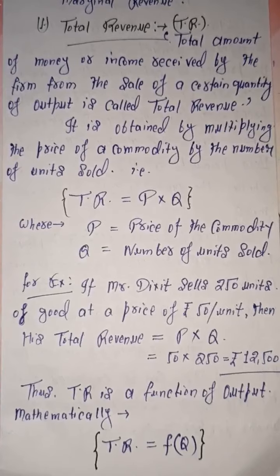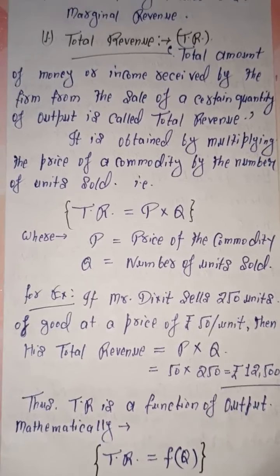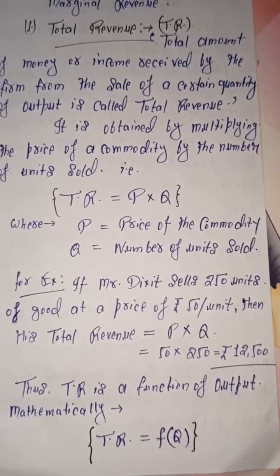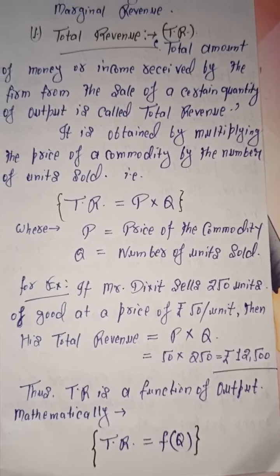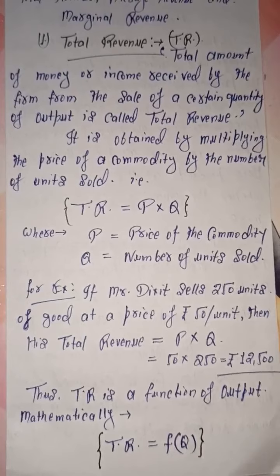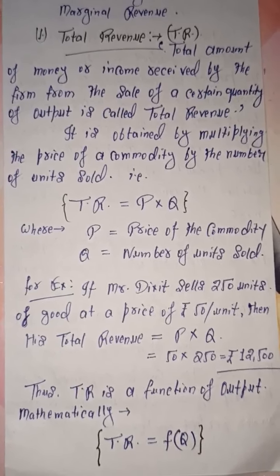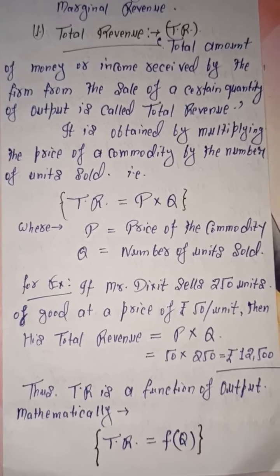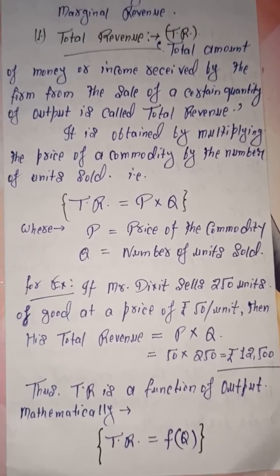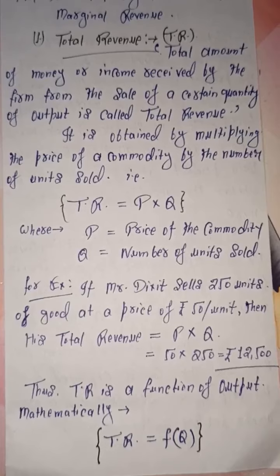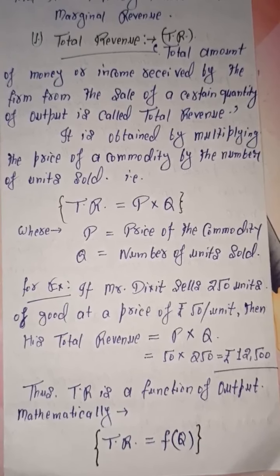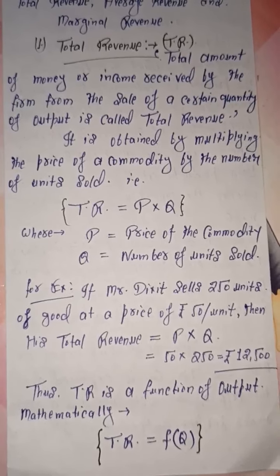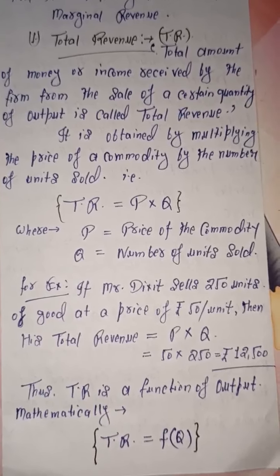For example, suppose Mr. Dikshit sells 250 units and the price of his good is Rs. 50 per unit. When he sells 250 units, what will be his total revenue? Using the formula, total revenue equals P into Q, where P equals 50 and Q equals 250. Multiplying both gives Rs. 12,500. This is the total revenue for Mr. Dikshit. Also, TR represents a function of Q — we can say total revenue is the function of output, and mathematically TR = f(Q).